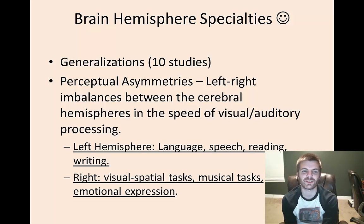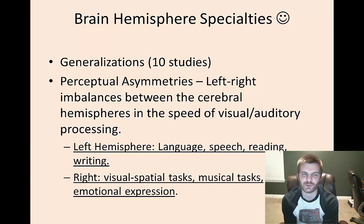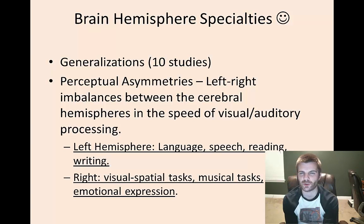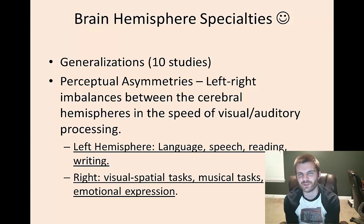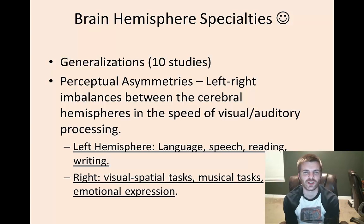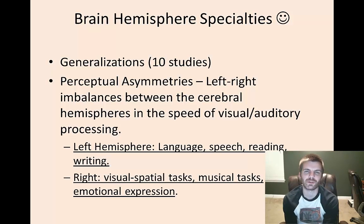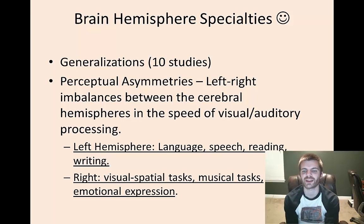Your brain has perceptual asymmetries — imbalances between the left and right hemispheres in how quickly they process visual and auditory information. In terms of specialties, the left hemisphere excels at language, speech production, reading and writing, logical thinking, and mathematics. The right hemisphere is more dominant for visual-spatial tasks, musical tasks, and emotional expression.